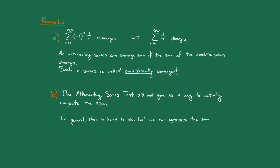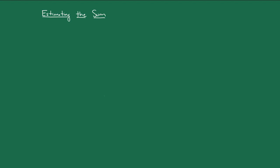And for the rest of this lecture, we'll talk about how to do this estimation. Let's suppose that we have a convergent alternating series that converges to some number s. Then, as we've seen before, we can approximate s by the partial sums, sn.